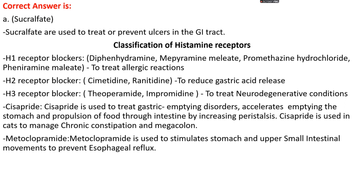There are three types of histamine receptor blockers: H1, H2, and H3. H1 receptor blockers are used to treat allergic reactions; examples include diphenhydramine, mepyramine maleate, promethazine hydrochloride, and pheniramine maleate. H2 receptor blockers include cimetidine and ranitidine, which are used to reduce gastric acid release. H3 receptor blockers include theoparamide and impromedine, which are used to treat neurodegenerative conditions.